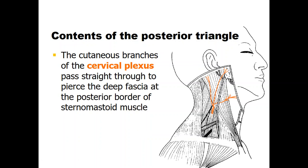Continuing with the nerve contents of the posterior triangle, the cutaneous branches of the cervical plexus emerge from the posterior border of the sternomastoid muscle approximately at its midpoint. These include the transverse cervical branch and the greater occipital nerve, providing cutaneous innervation to the neck, chin, lower area below the mandible, and the pre- and post-auricular areas.